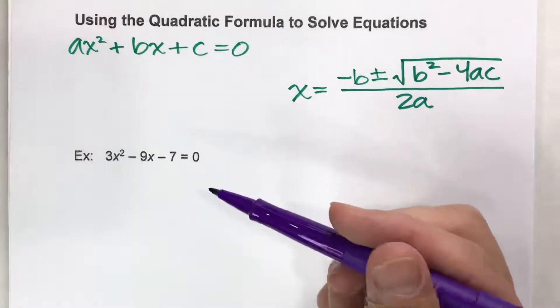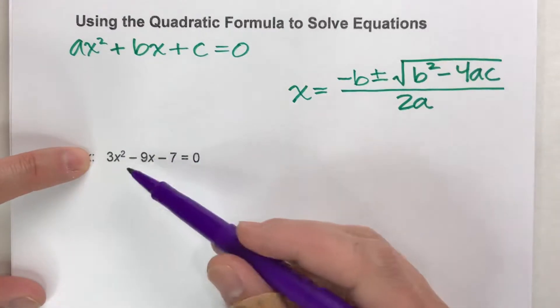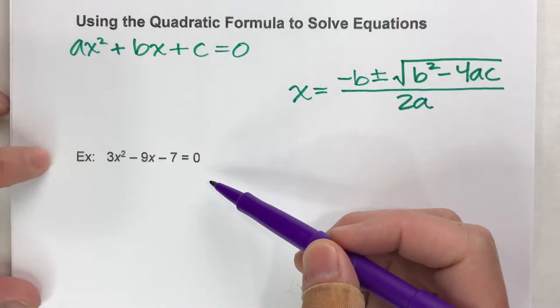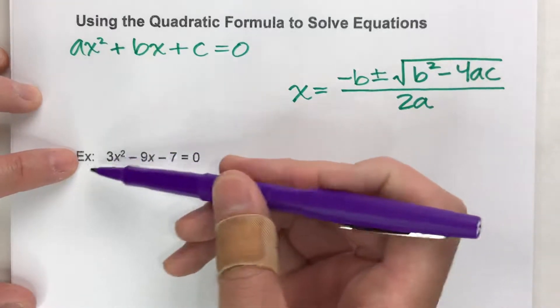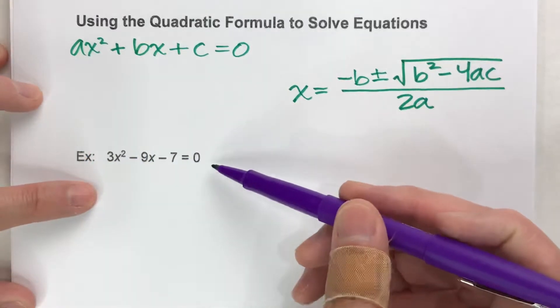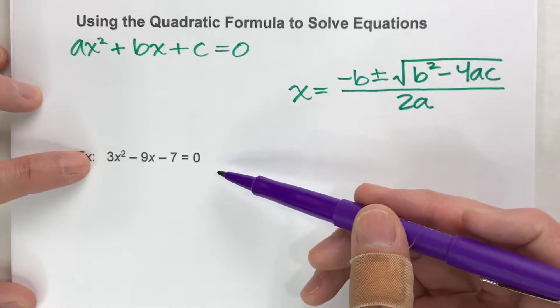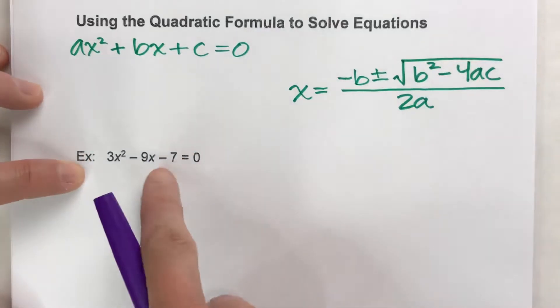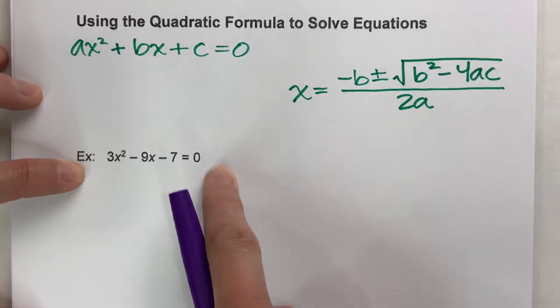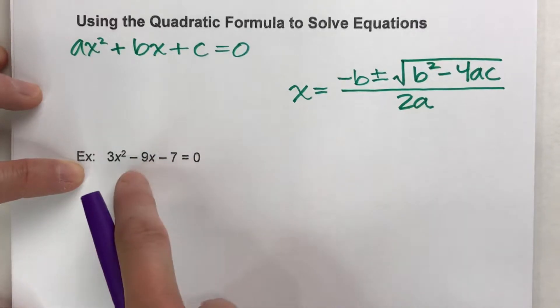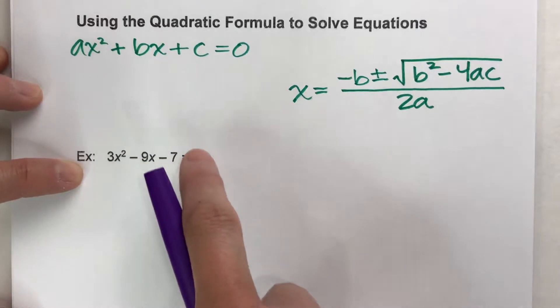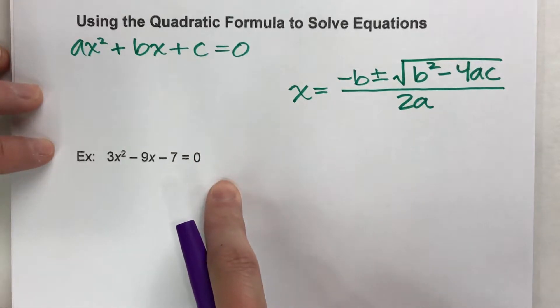Our example here is 3x squared minus 9x minus 7 is equal to zero. First thing first, make sure all your terms are on the left side equal to zero. And luckily for us it is. If there were any terms on the right hand side, we'd have to use algebra to get them over on the left hand side and make sure it equals zero on the other side.